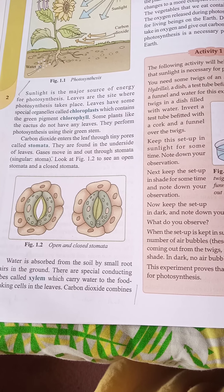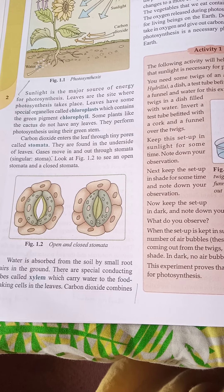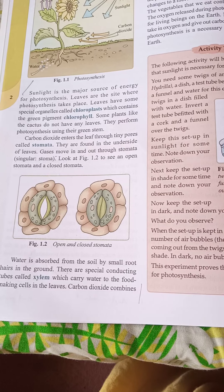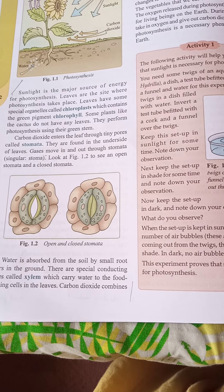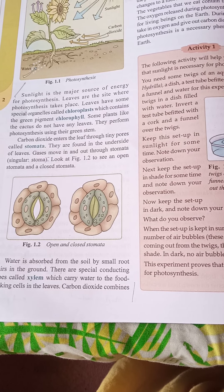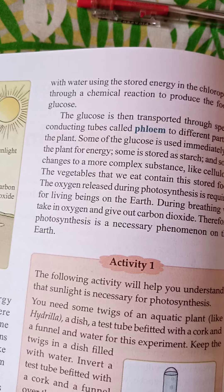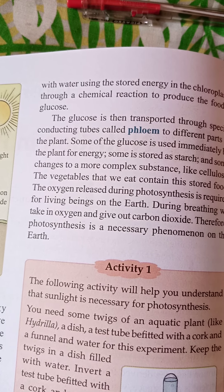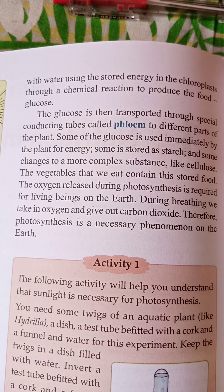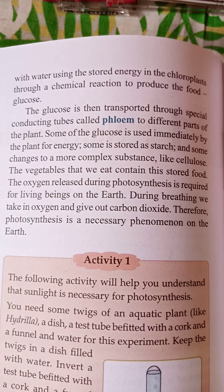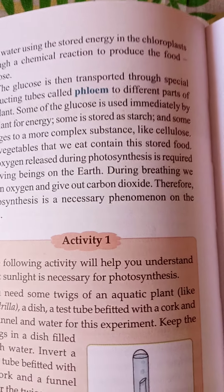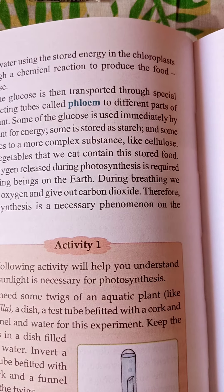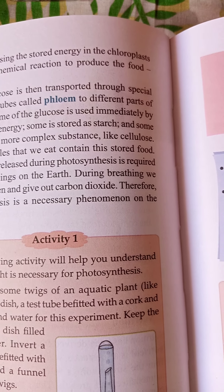In the leaves, glucose is produced and oxygen is also released. Now read the second row carefully on page number 2. The glucose produced is then transported to other parts of the plant body through special conducting tubes called phloem. Phloem carries the food manufactured in the leaves to the entire plant body.